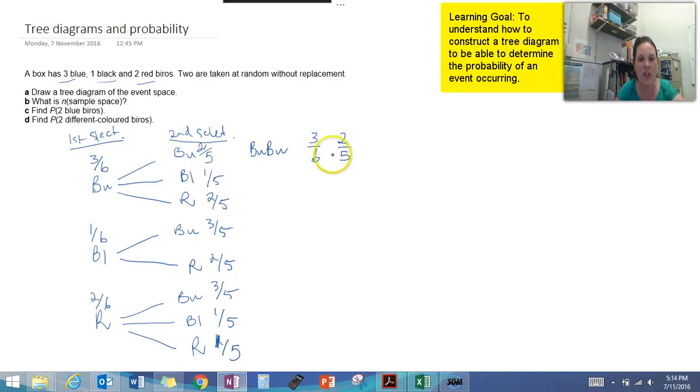So the first combination is blue blue, and we had three over six was the first chance and then two over five was the second chance. Now if we multiply those two chances together that gives us the overall chance of this actually occurring. So that gives us six over thirty, and then we keep doing that for all of our different combinations that we have.